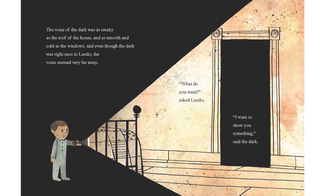Authors often use varying lexical density to achieve different purposes when writing their texts. If we take this example from the text The Dark by the author Lemony Snicket, we can see that he has used high lexical density in the first section of this page: the voice of the dark was as creaky as the roof of the house and as smooth and cold as the windows, and even though the dark was right next to Laszlo, the voice seemed very far away. The high lexical density in this detailed description really engages the audience and helps us to visualise and imagine the scene he is describing and how his character is feeling.